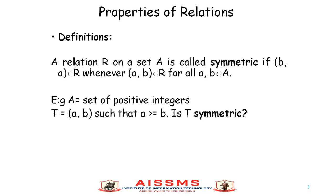Let's understand it by example. Suppose A is equal to the set of positive integers, and T = {(A, B) such that A ≥ B}. Is T symmetric? As per the definition of symmetric property, if (A, B) belongs to R then (B, A) should belong to R. So if A is greater than or equal to B, then B cannot be greater than or equal to A. So this relation is not symmetric.